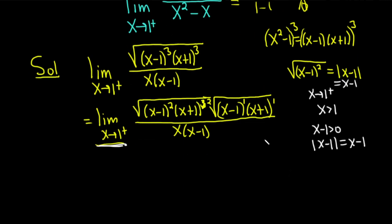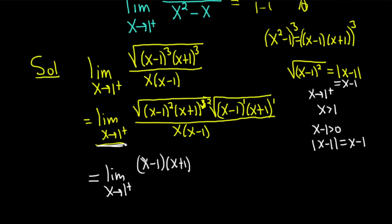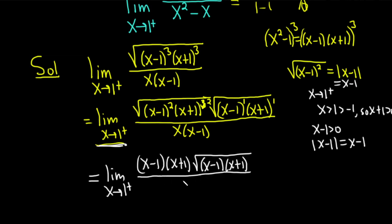It's really subtle, something you might not notice, but very important. This is equal to the limit as x approaches 1 from the right. Now we can free these from the square root — we just get x minus 1 times x plus 1. Normally it would be the absolute value of x minus 1, but we know x is bigger than 1. Also, since x is bigger than 1, x plus 1 is positive, so the absolute value of x plus 1 is just x plus 1. Then we also have the square root of x minus 1 times x plus 1, and on the bottom we have x times x minus 1.